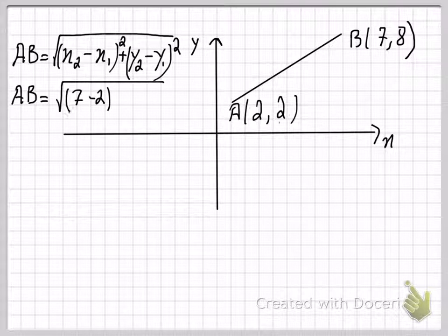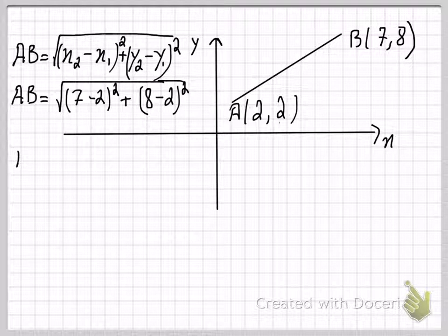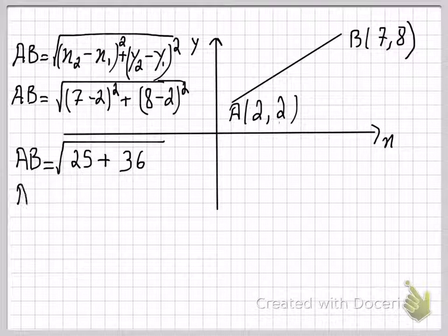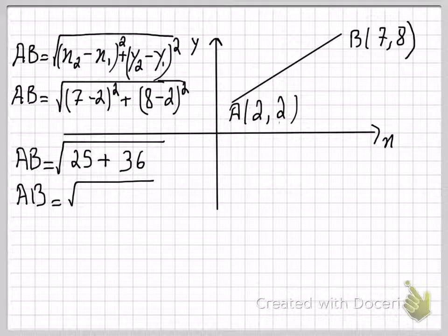AB will be equal to the square root of: 7 minus 2 is 5, and 5 squared is 25, plus 8 minus 2 is 6, and 6 squared is 36. So 25 plus 36 equals 61.